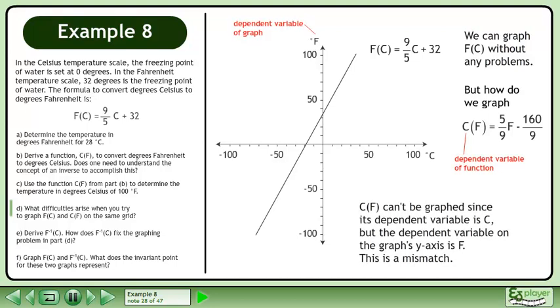c of f can't be graphed since its dependent variable is c, but the dependent variable on the graph's y-axis is f. This is a mismatch.